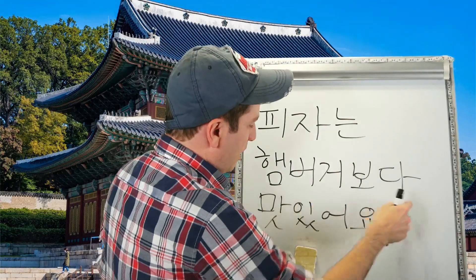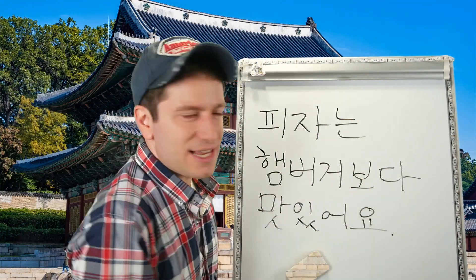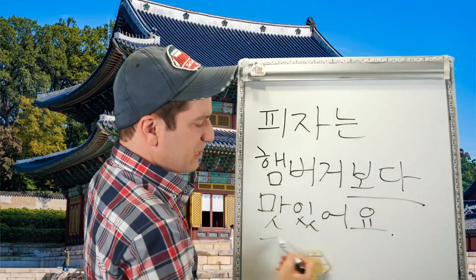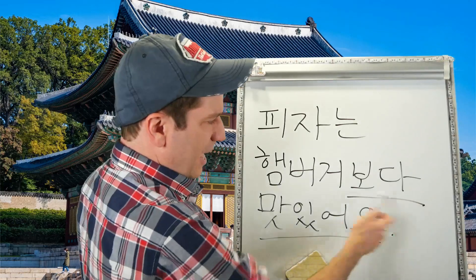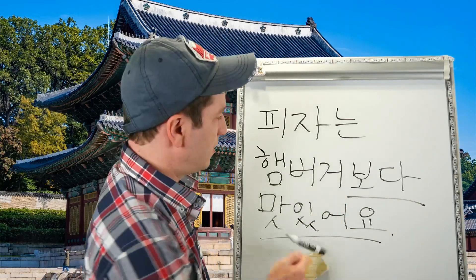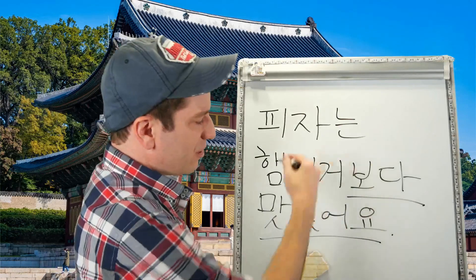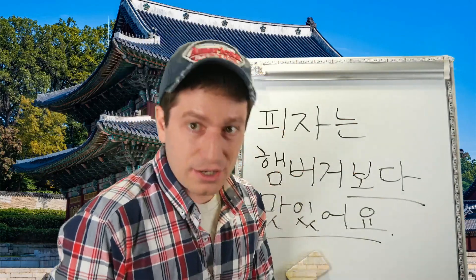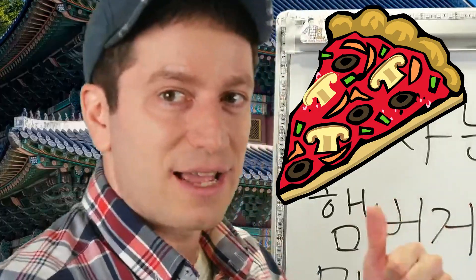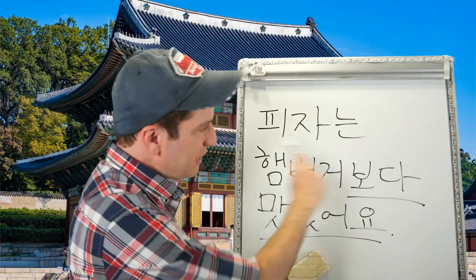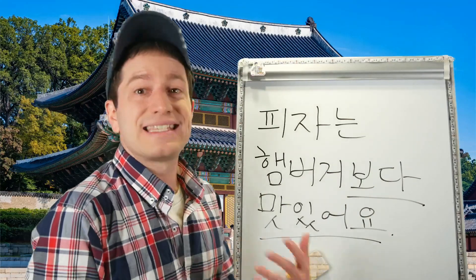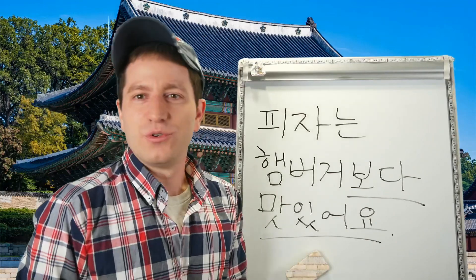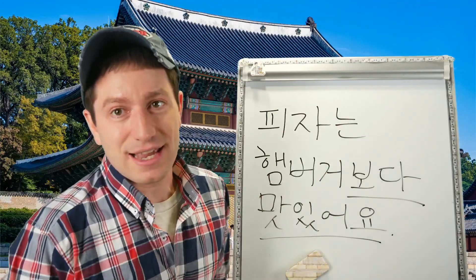For example: 피자는 햄버거보다 맛있어요. Pizza, then hamburger — compared to hamburgers, pizza tastes really good. So you're implying pizza tastes better than hamburgers. Whether you agree or not doesn't really matter — that's what the sentence says. So pizza is tastier than hamburgers.